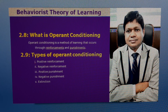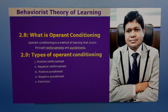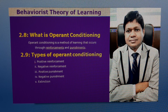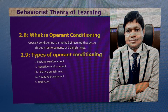Types of Operant Conditioning. There are five types of operant conditioning. They are: number one, positive reinforcement; number two, negative reinforcement; number three, positive punishment; number four, negative punishment; number five, extinction.